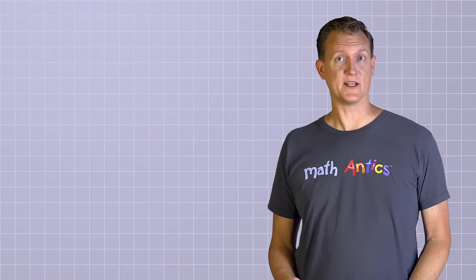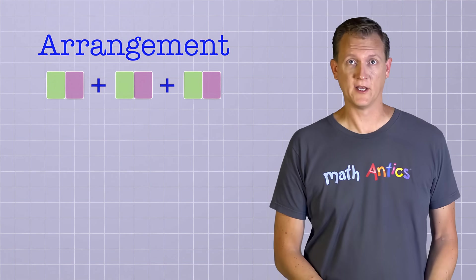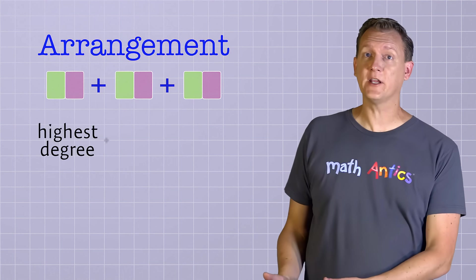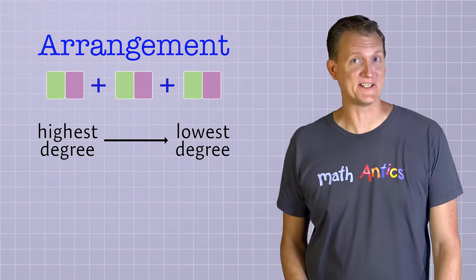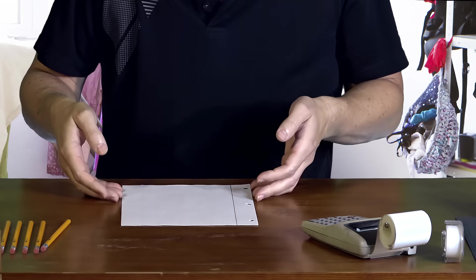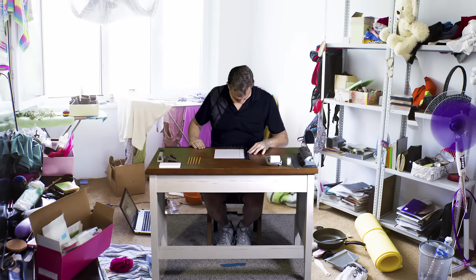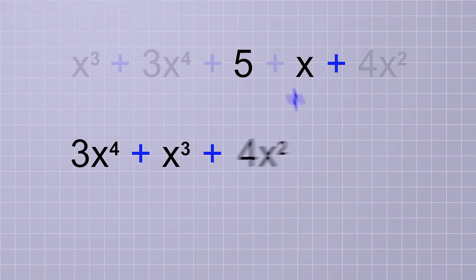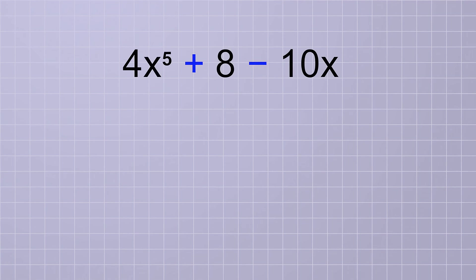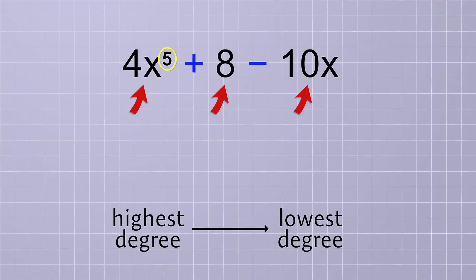Another reason that we care about the degree of the terms is that it helps us decide the arrangement of a polynomial. We arrange the terms in a polynomial in order from the highest degree to the lowest. You know, because mathematicians like to keep things organized. For example, this polynomial, which has 5 terms, should be rearranged so that the highest degree term is on the left and the lowest degree term is on the right. But of course, not every polynomial has a term of every degree. This is a 5th degree polynomial, but it only has 3 terms. We should still put them in order from the highest to the lowest, even though it has terms that are missing.